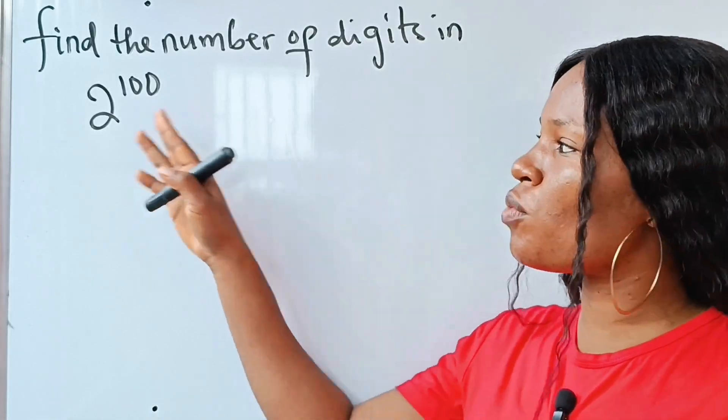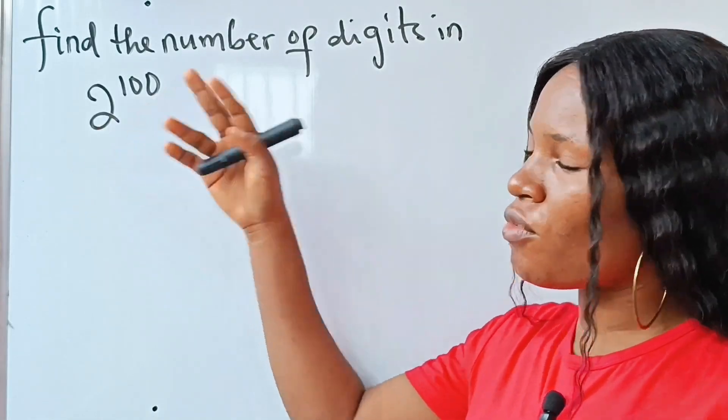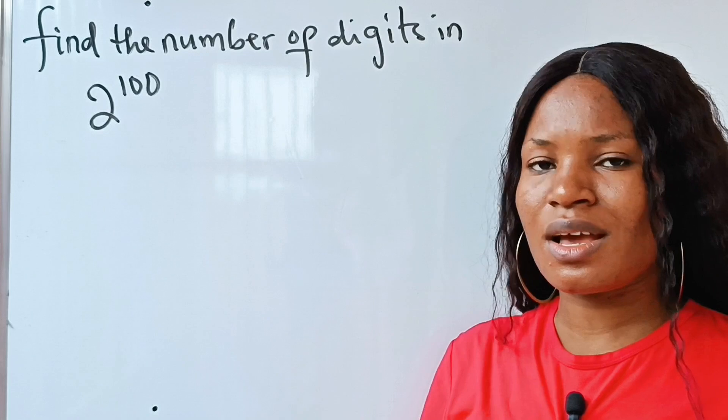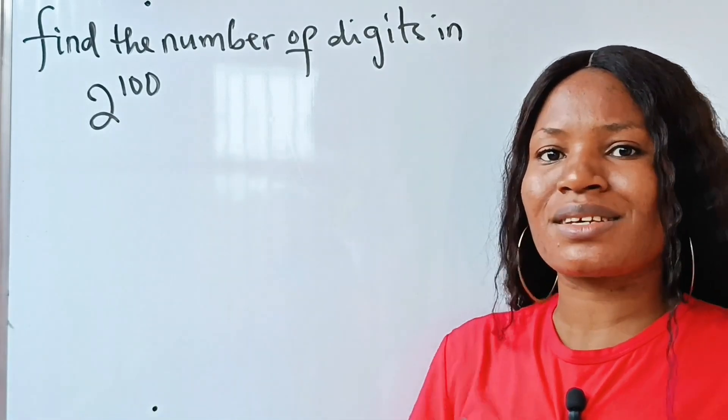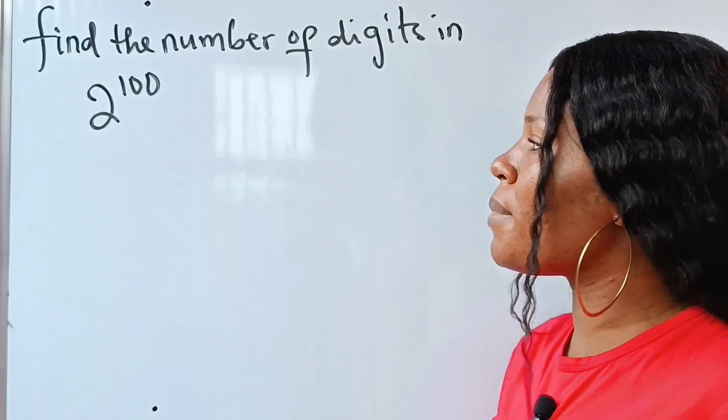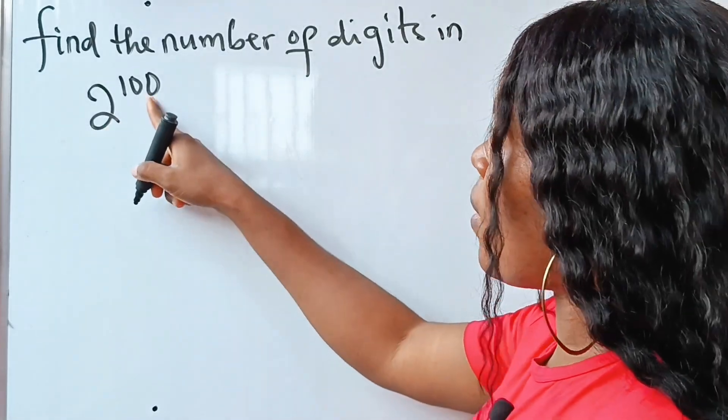The meaning of this question is when you multiply 2 by itself 100 times, the number you will get—how many digits does that particular number contain? What do I mean? When you raise 2 to the power of 100, the number you will get—how many digits does it contain?